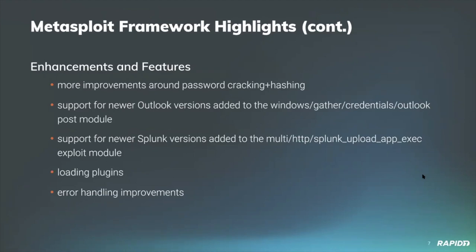Moving on to enhancements and features — additional work outside of modules. Community contributor Hoodie provided several improvements to the framework's cracking and hashing functionality, including the ability to export credentials in the John the Ripper format by specifying the .JTR extension when providing a filename with the creds command. Also added is support for a new advanced option called 'delete temp files,' which can prevent deletion of temporary files related to password cracking, and centralizing duplicate hash identifier code into one central library.